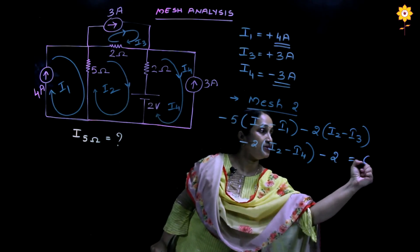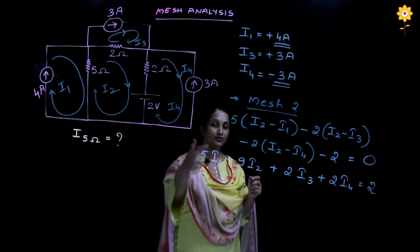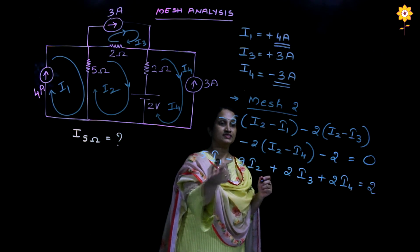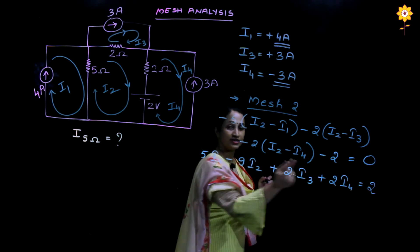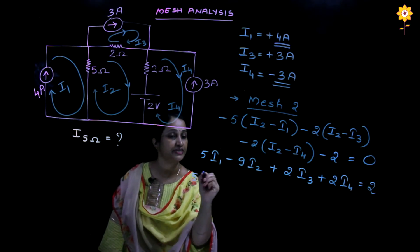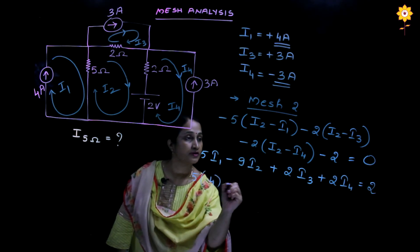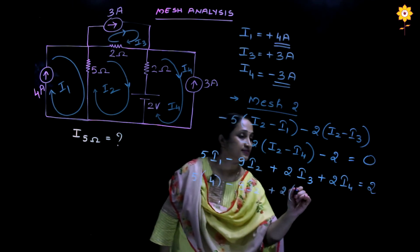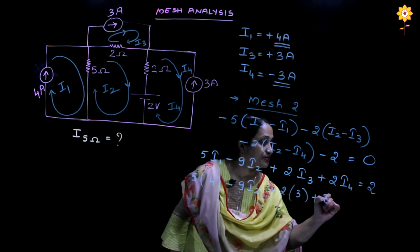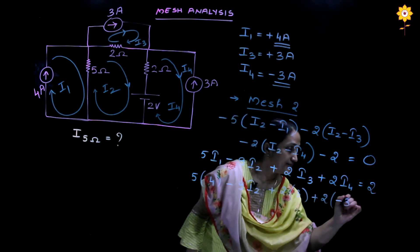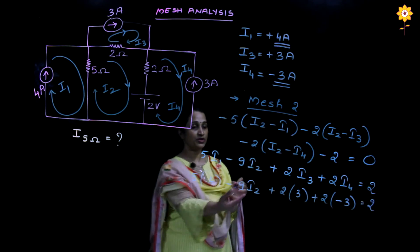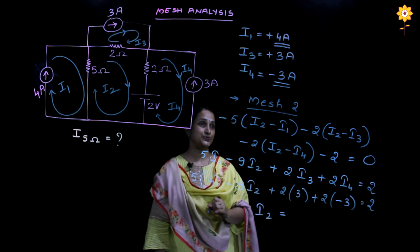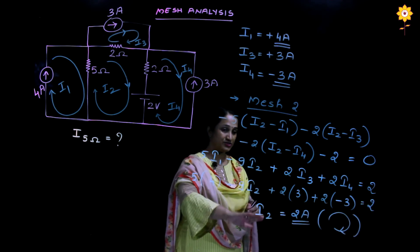Setting the equation equal to zero and grouping terms with i1, i2, i3, and i4, then substituting the known values: i1 equals 4, i3 equals 3, and i4 equals minus 3. This gives: 5 times 4 minus 9·i2 plus 2 times 3 plus 2 times (minus 3) equals 2. The only unknown remaining is i2.